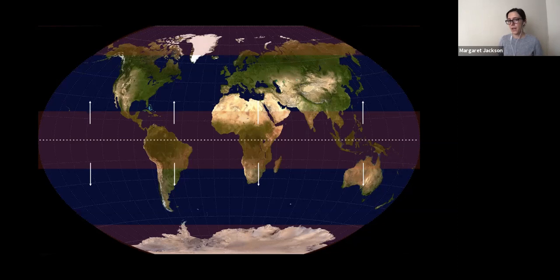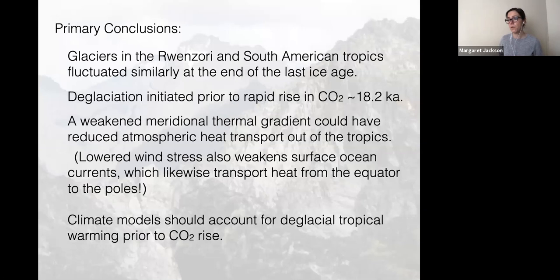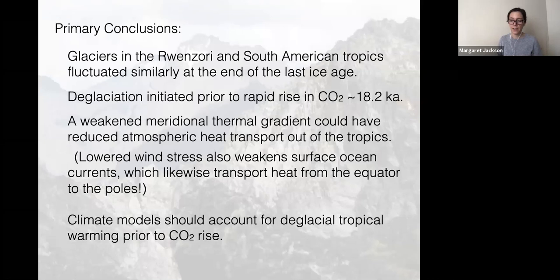The main takeaways are that glaciers in the Ruwenzori and the South American tropics apparently fluctuated similarly at the end of the last ice age, and deglaciation of these tropical sites initiated prior to the onset of rapid carbon dioxide rise roughly 18.2 thousand years ago. We suggest this may have been caused by a reduction in the thermal gradient between the equator and the poles, ultimately caused by increasing insolation to both the far north and far south. Early days yet, and there's a lot that can be done to test this hypothesis further.